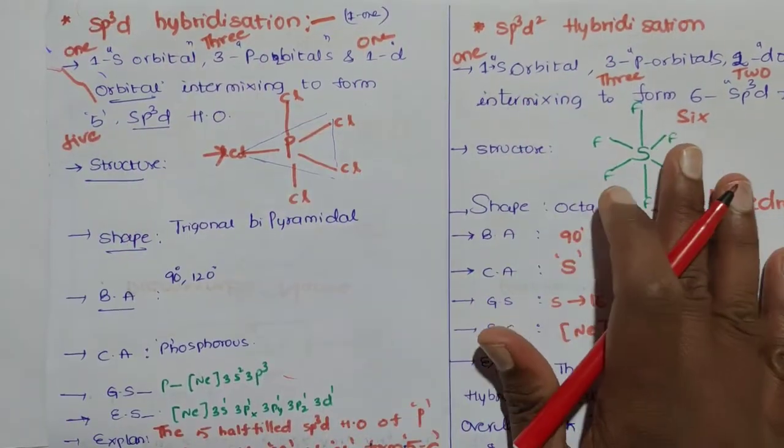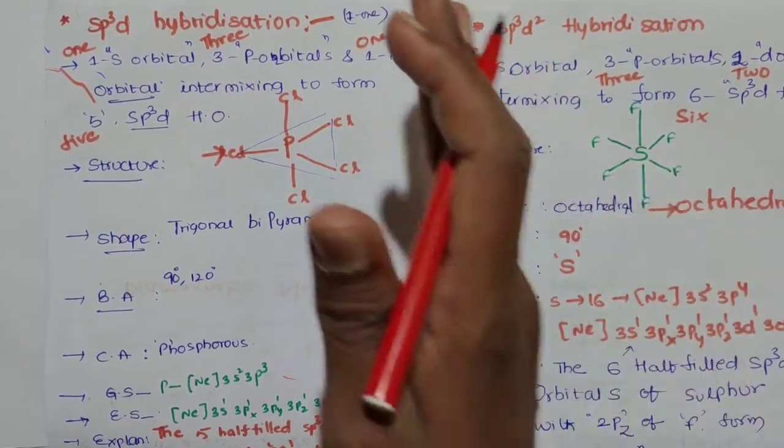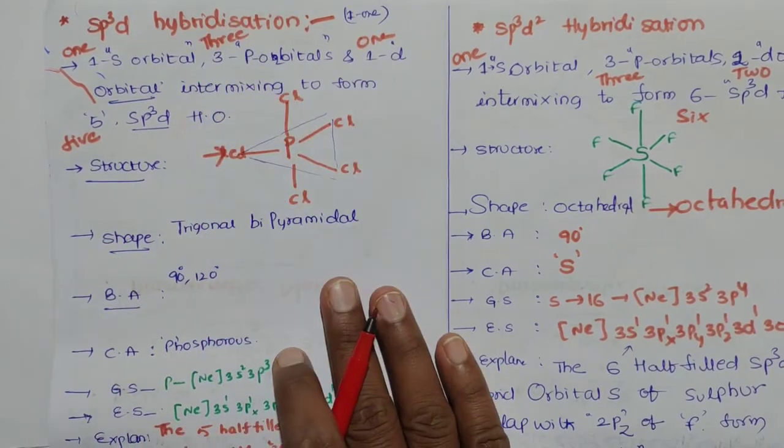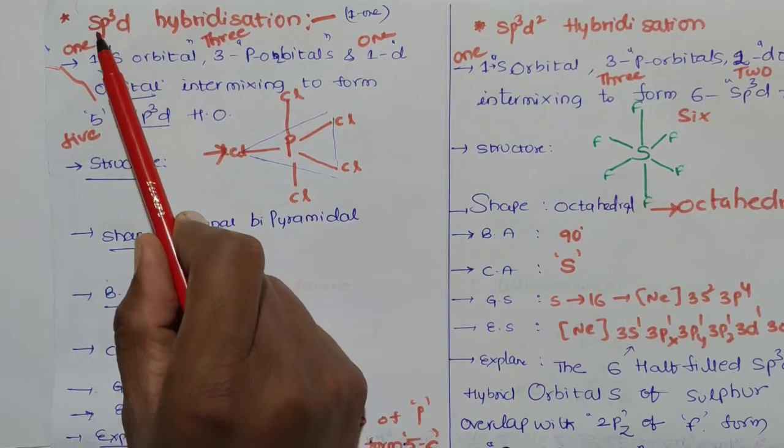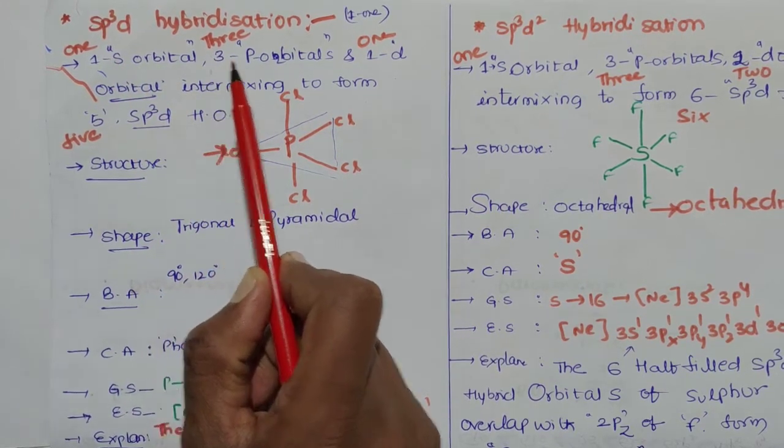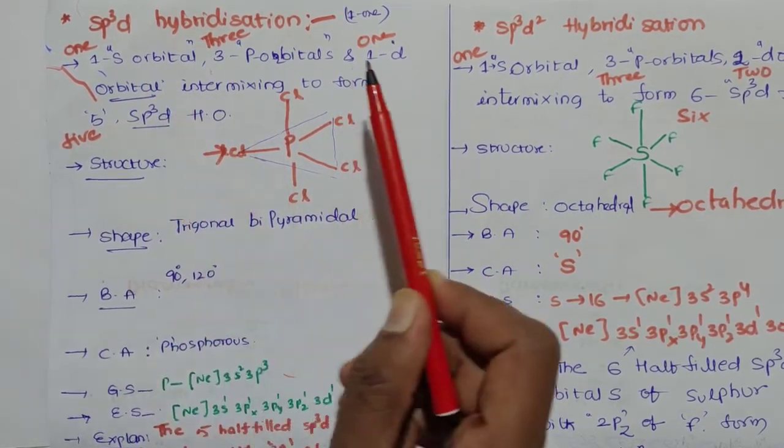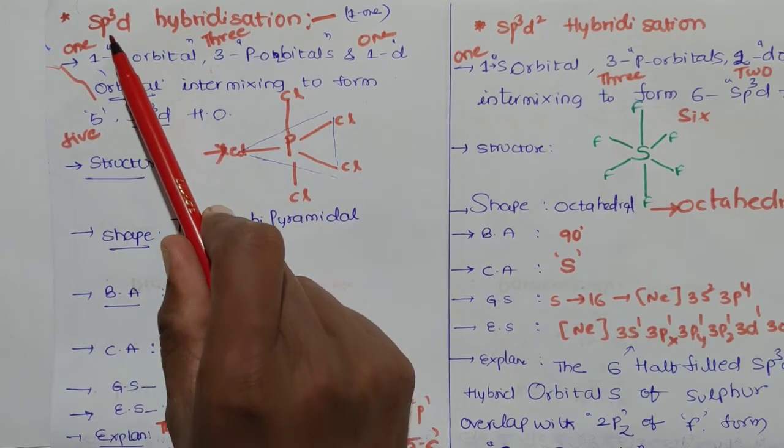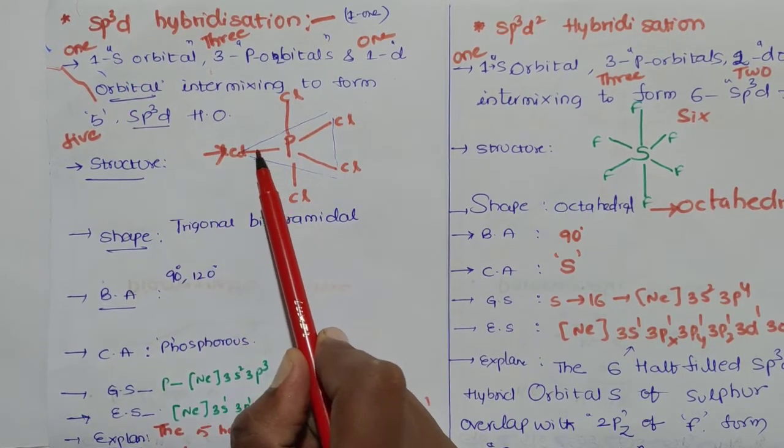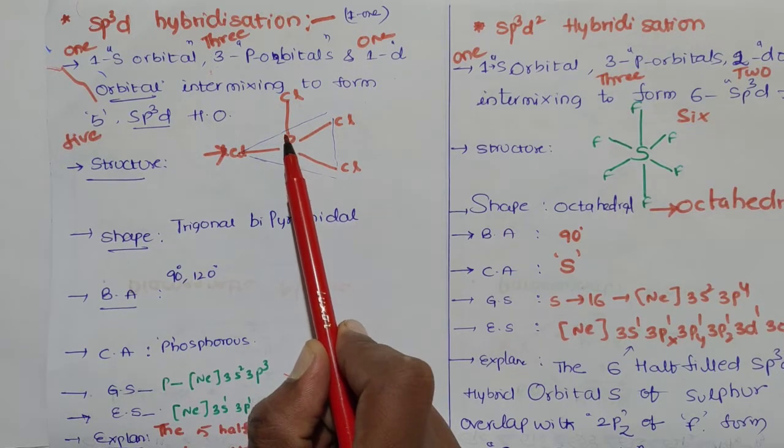sp³d hybridization: one s orbital, three p orbitals, one d orbital intermixing to form five sp³d hybrid orbitals. This hybridization is called sp³d hybridization.